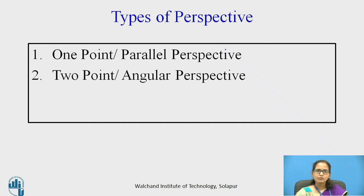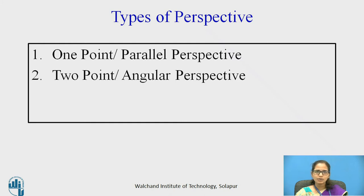In the parallel perspective you have one vanishing point, and in the two point perspective you have two vanishing points. Perspective is an art of representing a three dimensional view of an object which is drawn on a two dimensional surface or medium. It does not represent the true shape and size of an object, but gives an impression on paper which represents the height, width, or depth of the object with reference to another point.